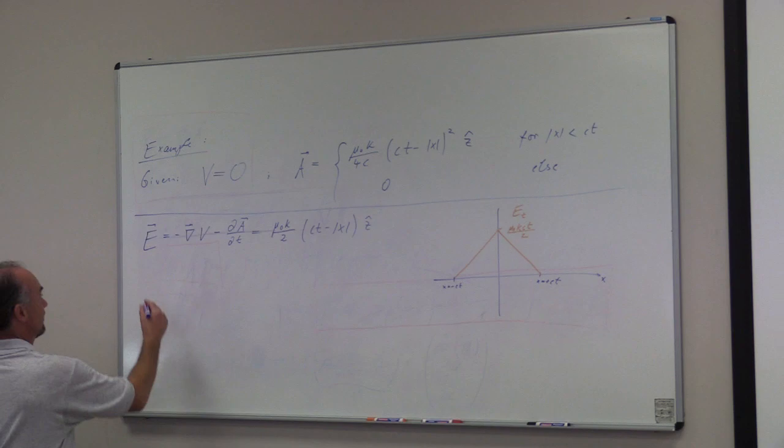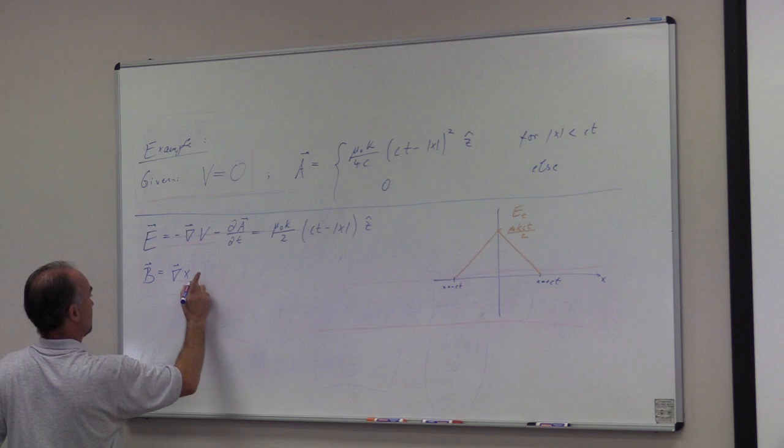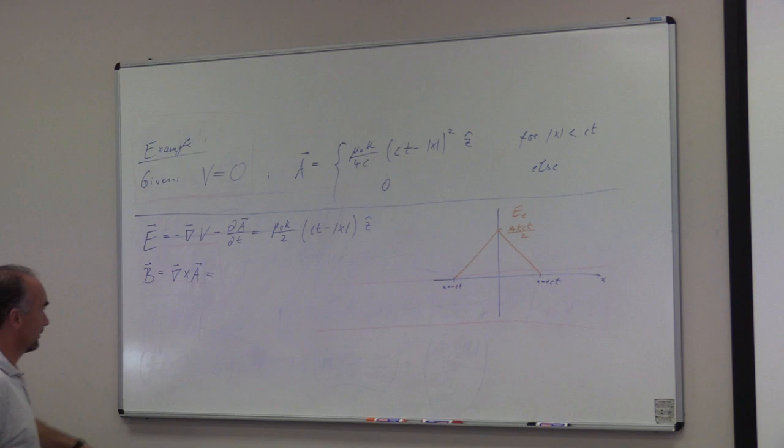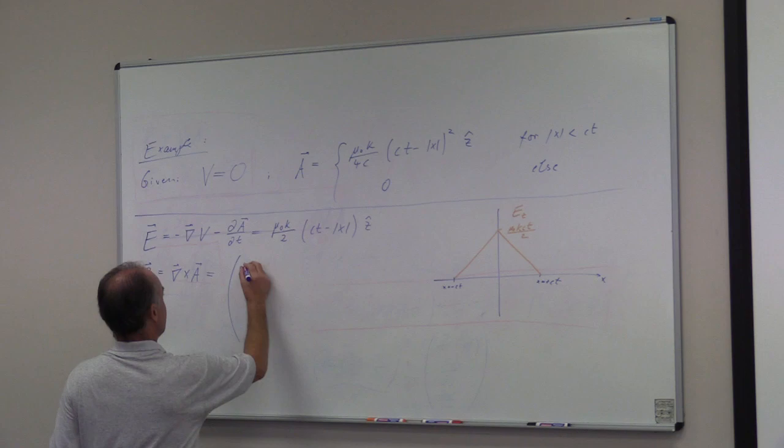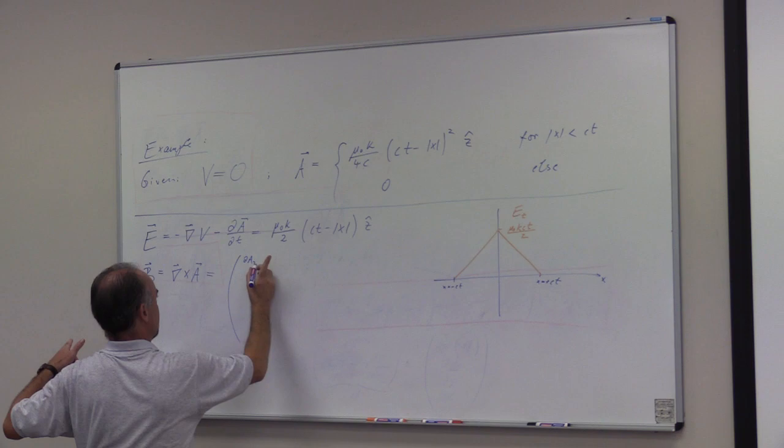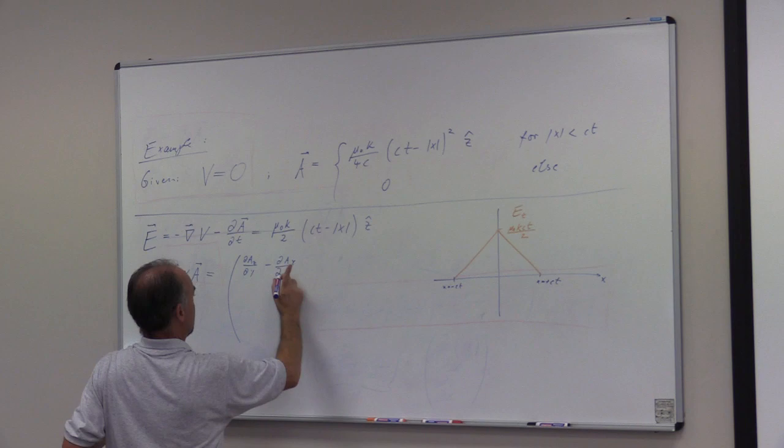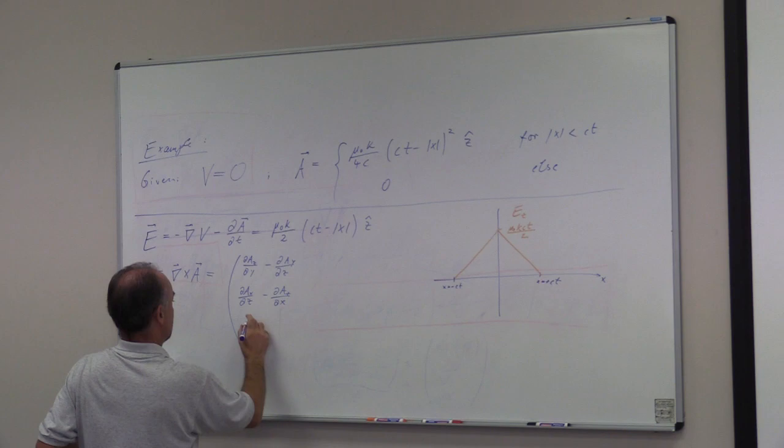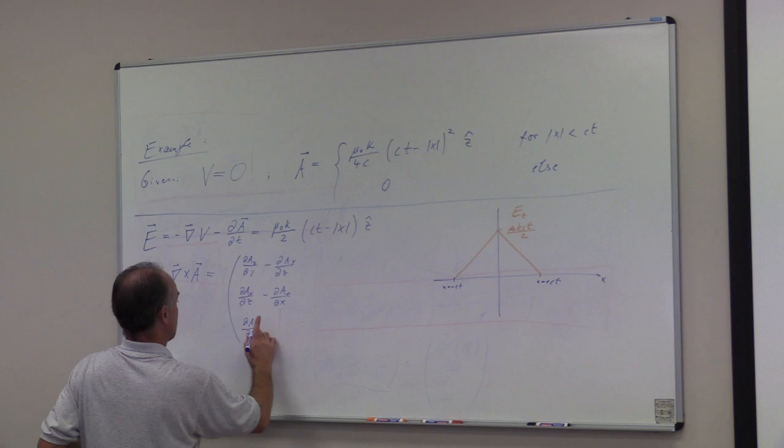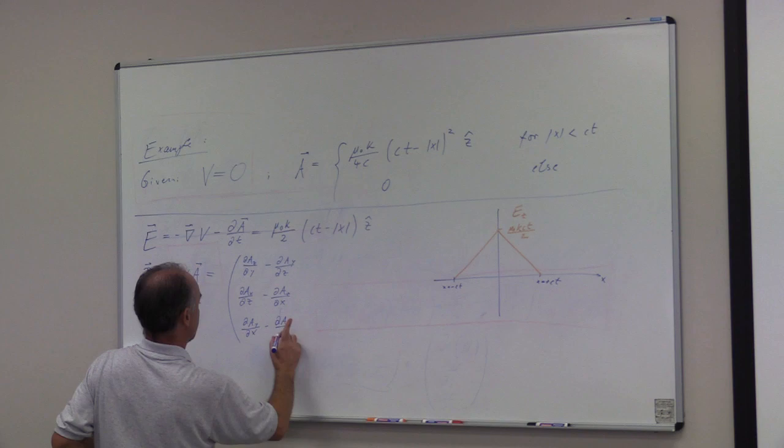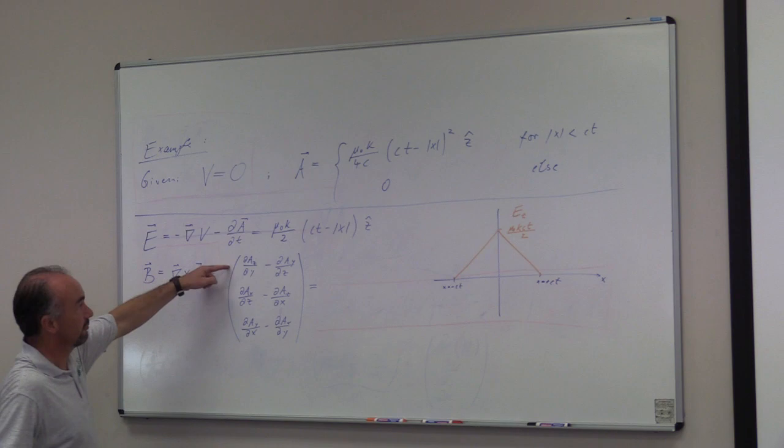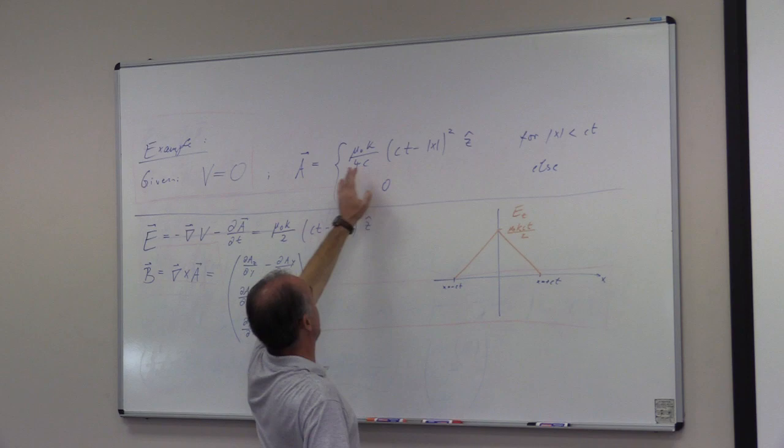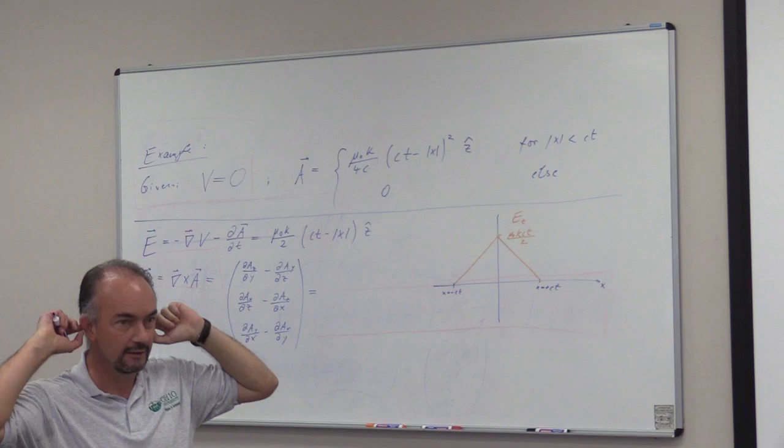Magnetic field, we calculate as curl of A. So now, let's write it out. B equals dA_z over dy minus dA_y over dz, dA_x over dz minus dA_z over dx, dA_y over dx minus dA_x over dy. It's only x components, but the thing is, we only have a z component for A, right? This will be negative.